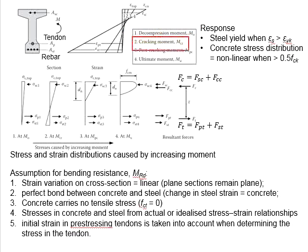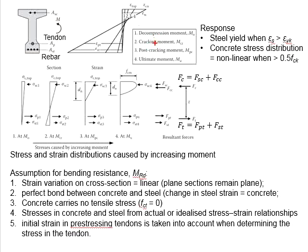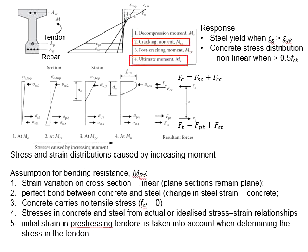The cracking moment refers to a state where cracking on the beam section is observed. As for the post-cracking moment, it represents the stage in between the cracking moment and the ultimate moment — that is, after the cracking of the member and before failure of the member.